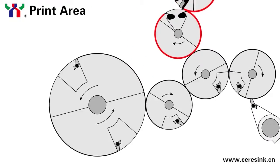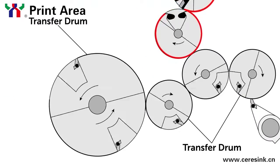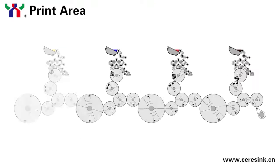The paper will then run through the transfer drums. Each cylinder is equipped with grippers that pick up the paper from the previous cylinder and transfer it to the next.